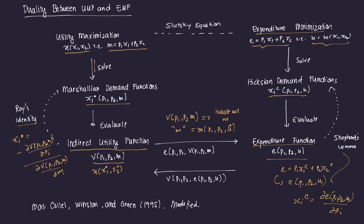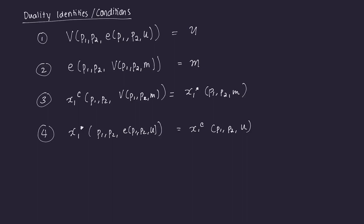There's another way to link the two processes through the initial conditions, and that's through the Slutsky equation, which we'll explore in another video. These duality conditions can be summarized as follows. The first condition is: if we have our indirect utility function and we plug in the expenditure function as M, we should get out the value u — it should cancel out and you should just be left with u mathematically.